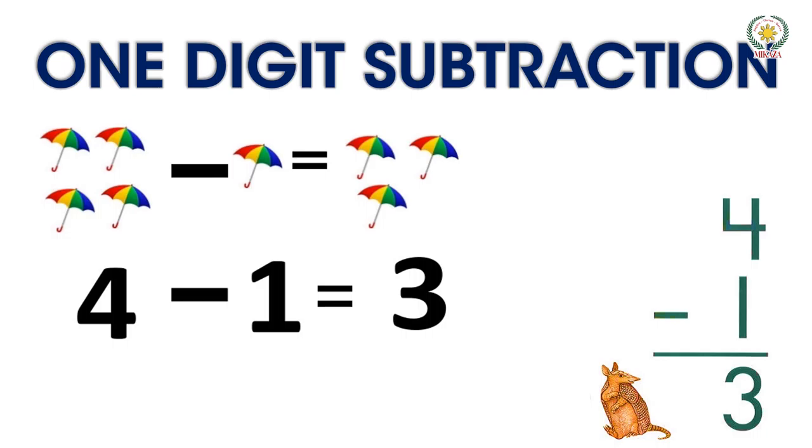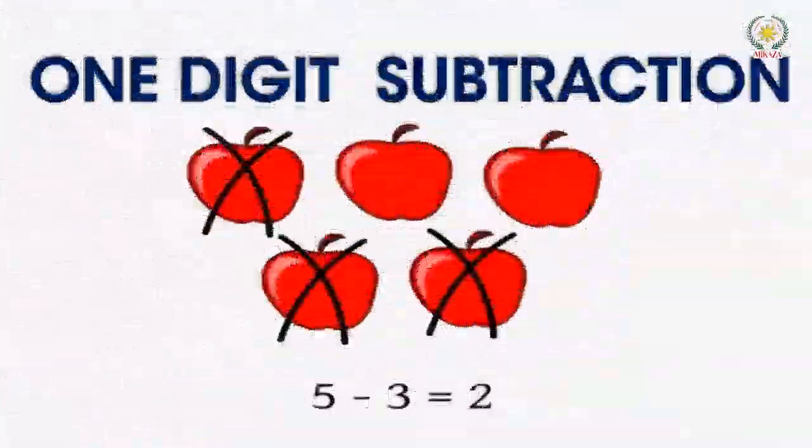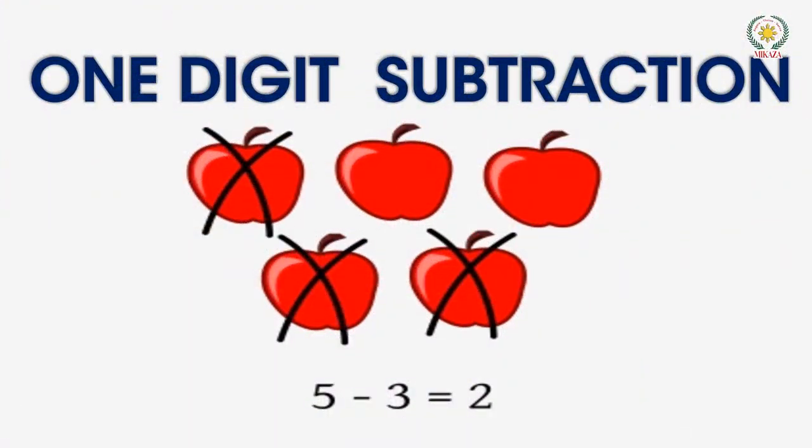One digit subtract. 4 minus 1. Now we have 4 umbrellas. If you look at the picture, we have minus 4 umbrellas. How many umbrellas have? 3 umbrellas. 4 minus 1 is equal to 3.